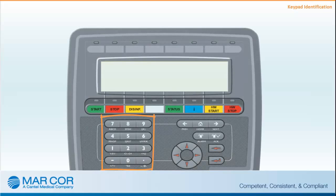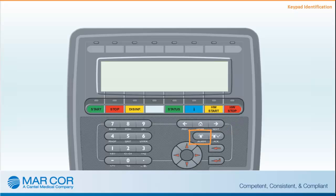The Number buttons, or keypad, permit entering codes and parameters during programming. The Home button returns the operator to the main CWP menu. The Previous and Next arrow buttons allow navigation back and forth through screen displays. The Alarm button lists current and past alarms. The Alarm Acknowledgement button resets alarms. The Arrow buttons move the cursor on the display. The Clear button erases unwanted data during programming, similar to the Backspace key on a computer keyboard. The Enter button confirms entered information and is used to perform commands; it will display setting ranges if pressed without first entering a value.